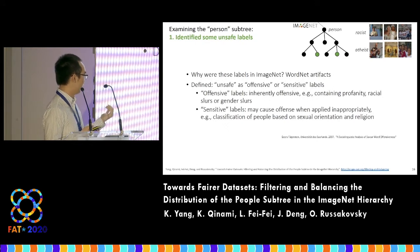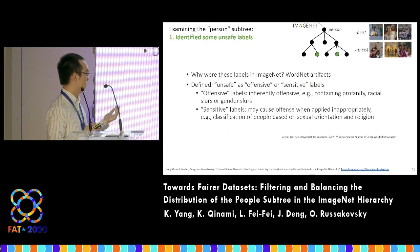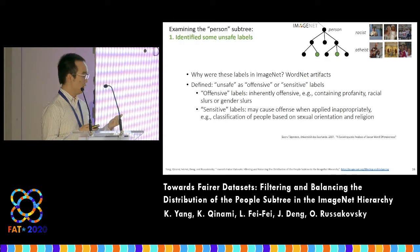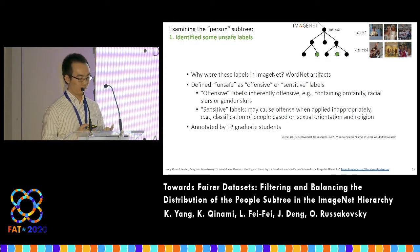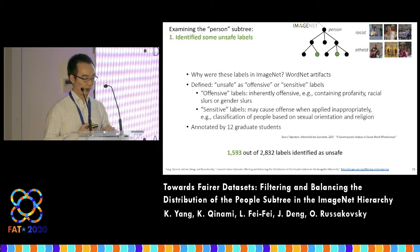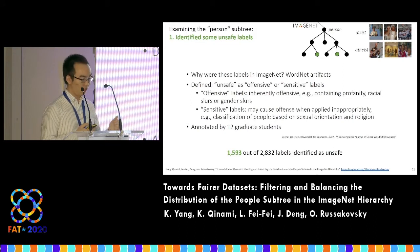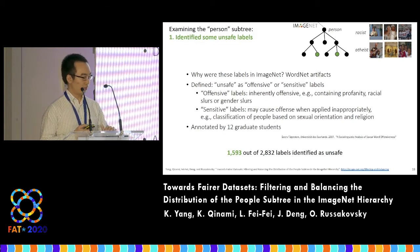Or it's not inherently offensive but sensitive — it may cause offense when applied inappropriately, for example, classification of people based on religion and sexual orientation. The annotation was done in-house by 12 graduate students and resulted in 1,593 out of 2,832 labels in the present sub-tree identified as unsafe.